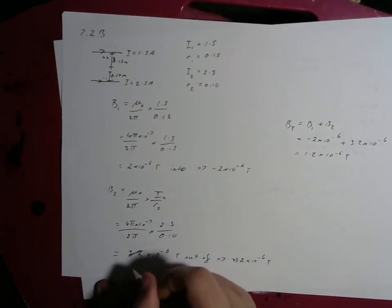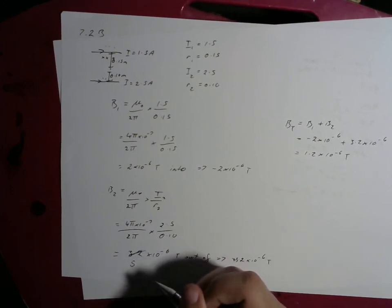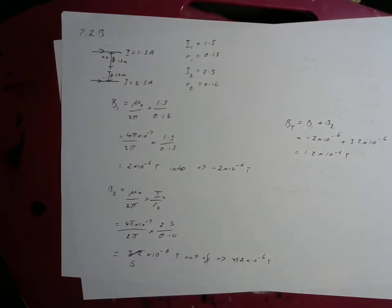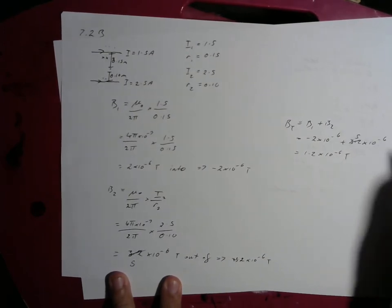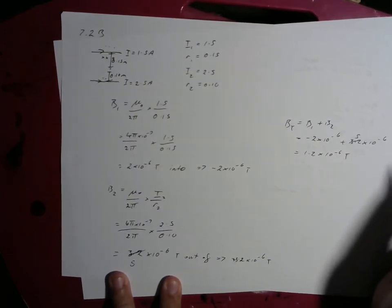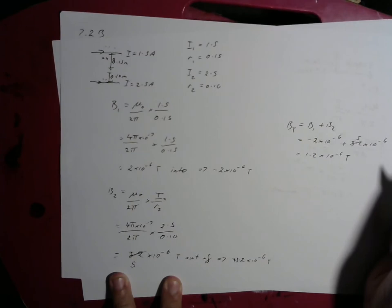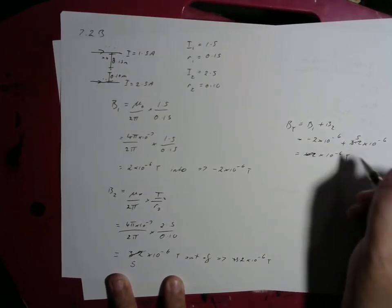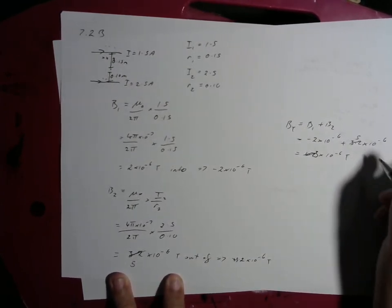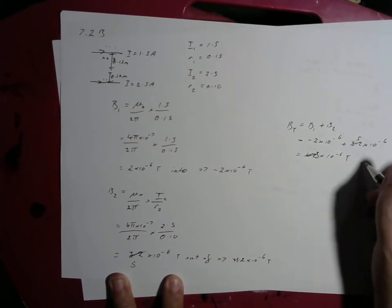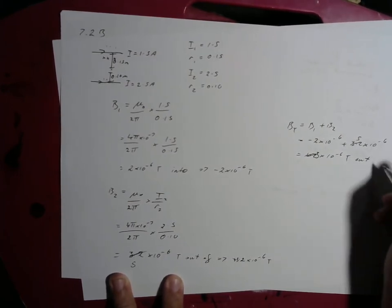Sorry, I copied the wrong part. This should be a 5, 5 times 10 to the negative 6. So let's correct that. 5 times 10 to the negative 6, and negative 2. Not sure where 3.2 came from, so it should just be equal to 3 times 10 to the negative 6. And because it's positive, that means it's going to be out of the page.